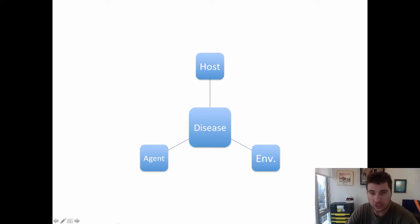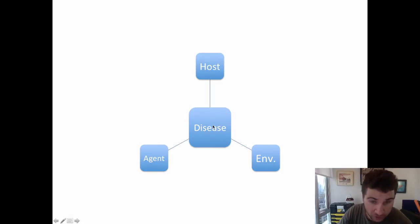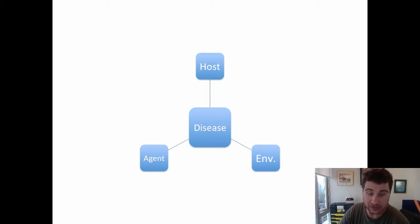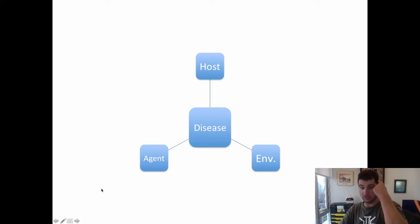What we're going to be talking about is mostly the triangle — there's a triangle called the Agent, the Environment, and the Host. It's very important when an infectious disease is present to understand there's a difference between infection and having a disease, meaning you can be infected but not have the disease. There was a big case on that called Typhoid Mary.